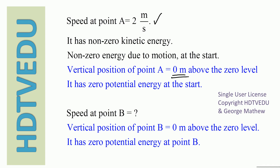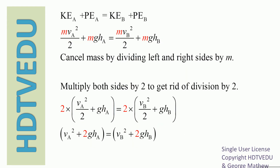Speed at point B is what we are looking for. The vertical position of point B is also zero, so both points A and B are at the same zero level. Total mechanical energy is conserved: KE plus PE at A equals KE plus PE at B. Kinetic energy is one-half Mv squared; potential energy is Mgh. So: Mva² / 2 + MghA = Mvb² / 2 + MghB. Multiply both sides by 2 and divide both sides by mass to get a simplified expression.